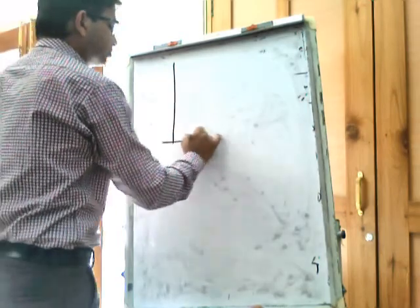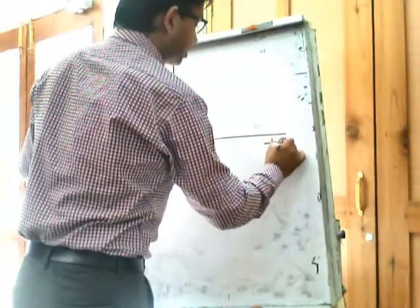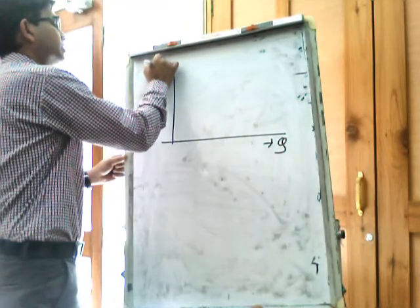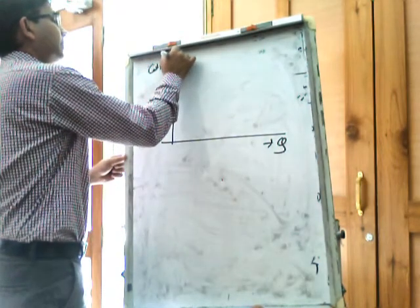Here in the horizontal axis we are measuring output, and in the vertical axis we are measuring cost and benefit.